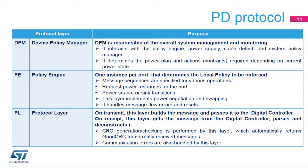Three software layers are defined in the PD specification. Layer 1 is the Device Policy Manager (DPM), which handles device-level system management and monitoring, and determines the power plan and contracts depending on current power state. Layer 2 is the Policy Engine (PE), which controls a single UCPD port; message sequences are defined to request power resources, perform source or sink transitions, implement power negotiation and swapping, and handle message flow errors and reset. Layer 3 is the Protocol Layer (PL), which constructs and deconstructs PD messages, automatically returns a good CRC when a message is correctly received, and handles transmission errors such as timeout and retries.